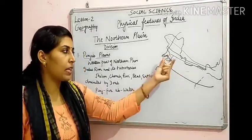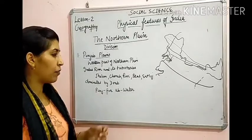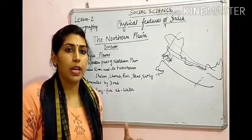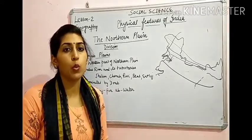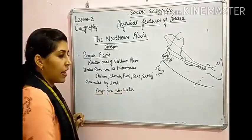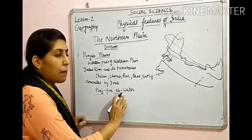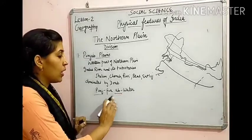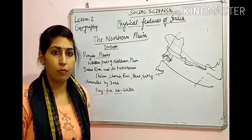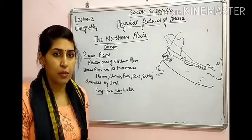Punjab Plain में five rivers हैं — Punjab का नाम भी इसी से आया है: Punj means five and Ab means water — the area carried by five rivers. So it is called Punjab.